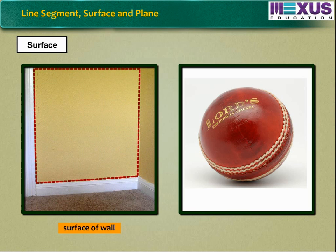For example, surface of wall is flat while the surface of a cricket ball is curved.